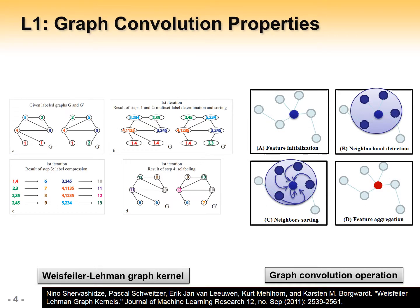We found that in most of the existing graph neural networks, the graph convolution operation actually shares the similar steps with the Weisfeiler-Lehman graph kernel. First, the nodes are initialized using discrete or continuous node attributes. Then, it detects the node neighborhood. Most of them use one-hop neighborhood.